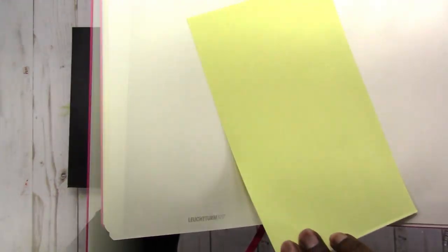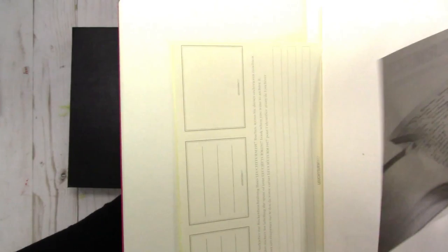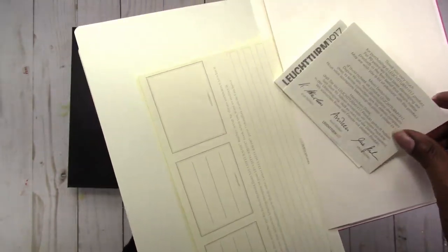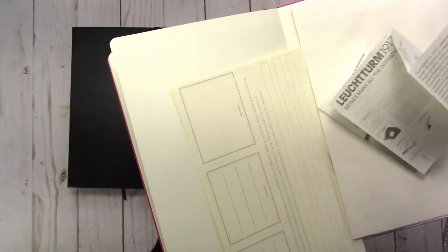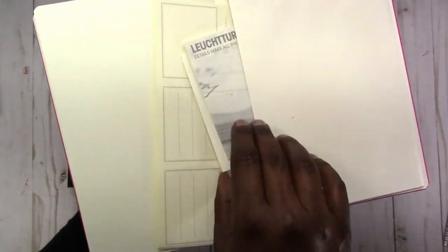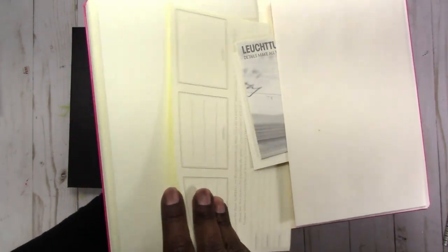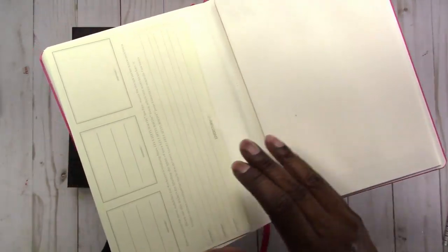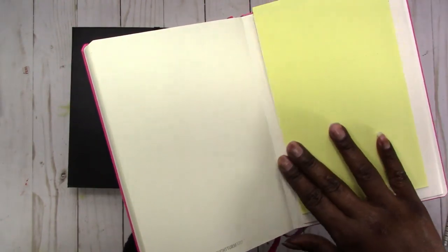Here's how you spell it - Leuchtturm is how it's pronounced, Leuchtturm 1917. This is a sheet of labels that you can use with it. It comes with it. It also has a pocket in the back. Here is the card that came with the journal and everything. The only thing about this is that it's like a cream colored paper and I prefer a white paper, which is why I like the Michaels journal.